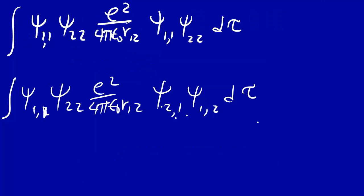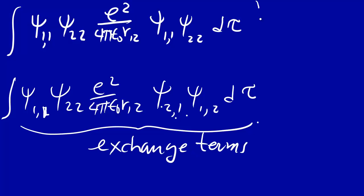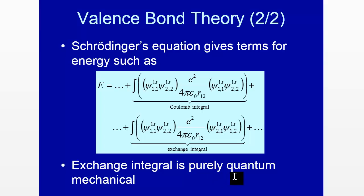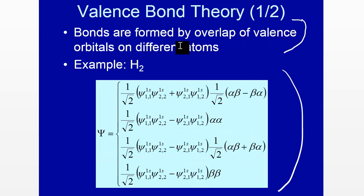The cross terms represent having the first electron on the first atom and the second on the second, then switching them. This cannot be explained classically — it gives stabilization of energy just by switching electrons. Since electrons are indistinguishable with the same charge and mass, there's no classical reason for the energy to change. This is a purely quantum mechanical effect called the exchange terms. The Coulomb interaction is the classical part; the exchange terms are purely quantum mechanical. That, in a nutshell, is valence bond theory both quantum mechanically and qualitatively in terms of valence orbital overlap.